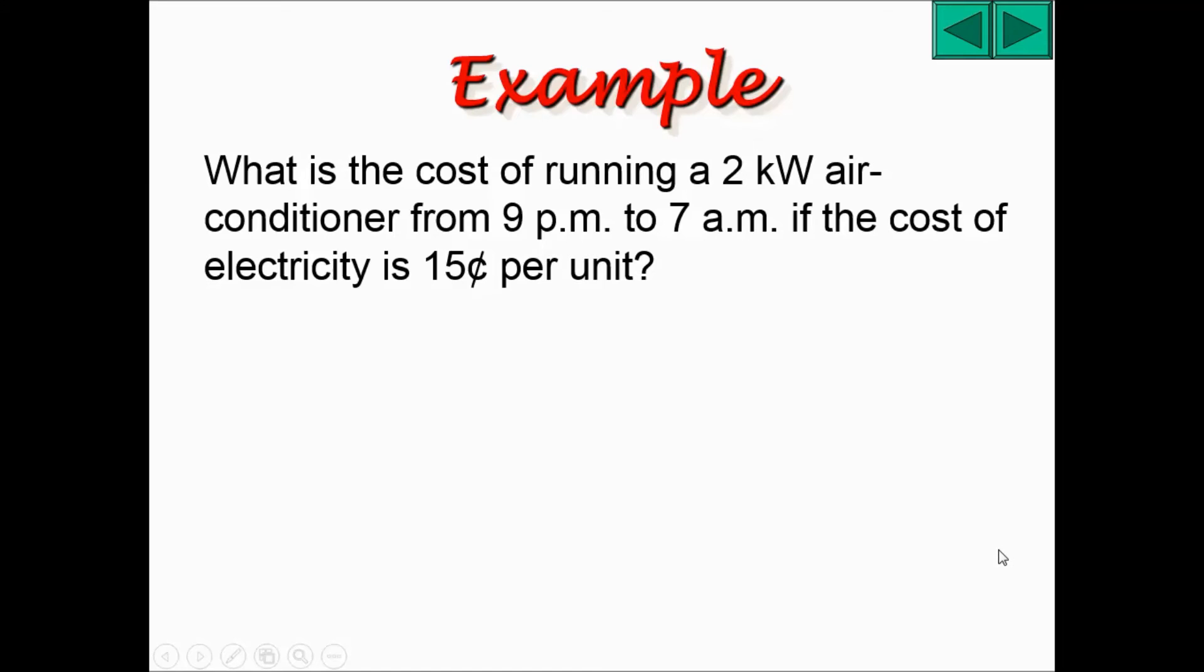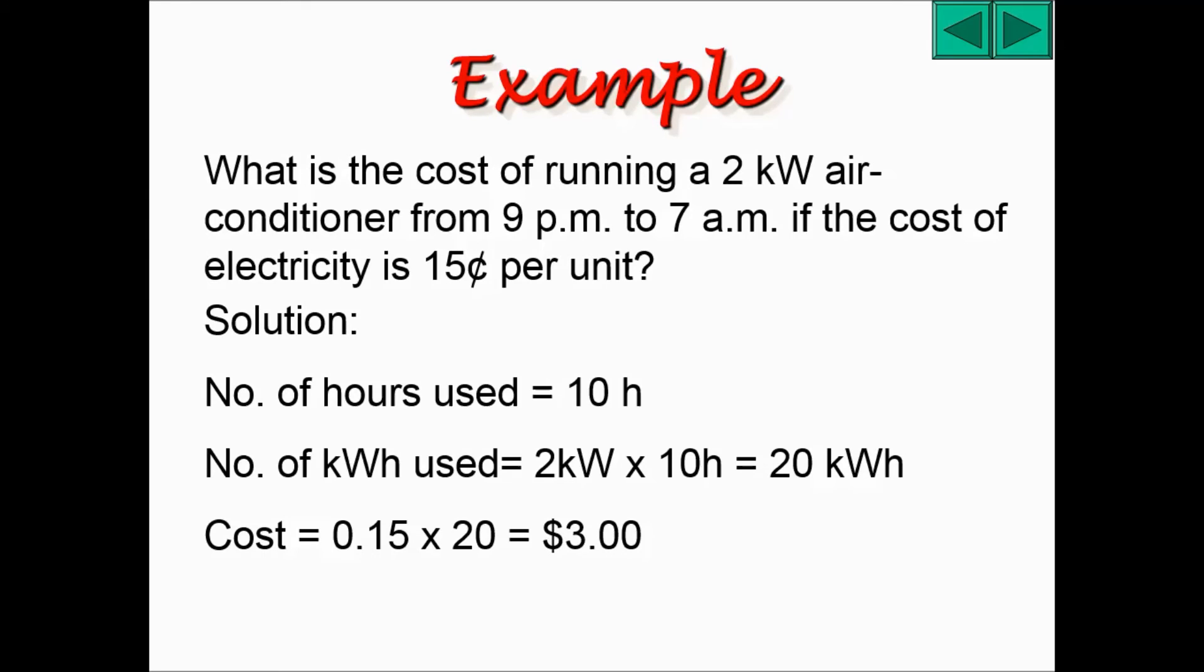Let's try this example of running an air conditioner. The solution would be number of hours used is 10 hours. Number of kilowatt hours used is 2 kilowatts times 10 hours, which gets you 20 kilowatt hours. If they ask you about a unit of electricity, 1 unit means 1 kilowatt hour.